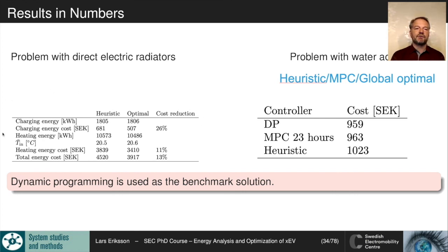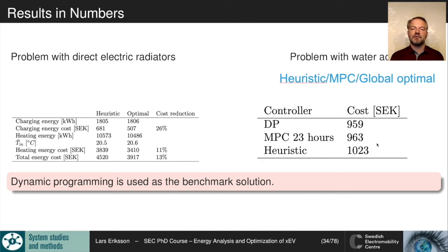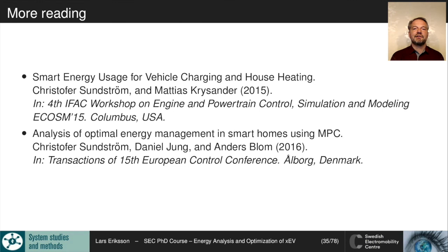A further study examined a water accumulator, where dynamic programming was used as the global optimal controller and MPC as a near-optimal controller, with a 23-hour prediction horizon. The heuristic controller gave higher costs, showing that planning with dynamic programming saves money. This illustrates how dynamic programming can be used outside a vehicle setting. Further details are available in the referenced papers.